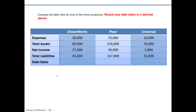Let's first review the formula for the debt ratio. It's total debt — which is also synonymous with total liabilities — divided by total assets. So we do need total liabilities and total assets, but for our calculation of the debt ratio, expenses and net income are not relevant. They're needed for some other ratios, just not this one.